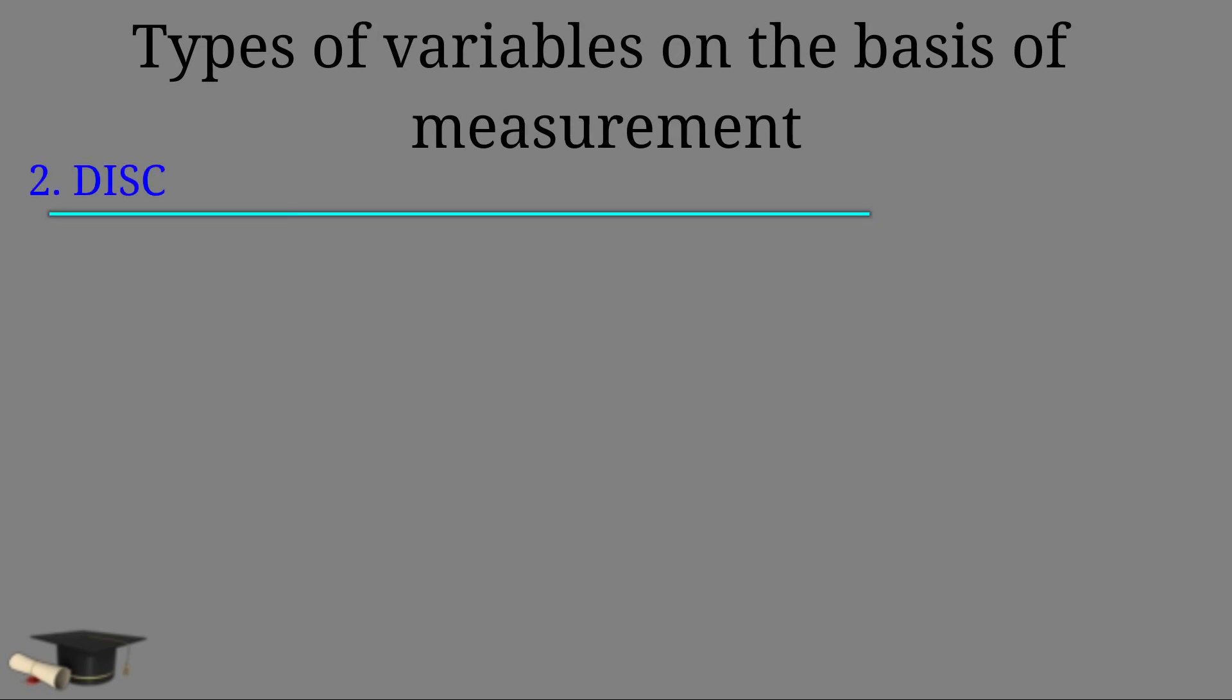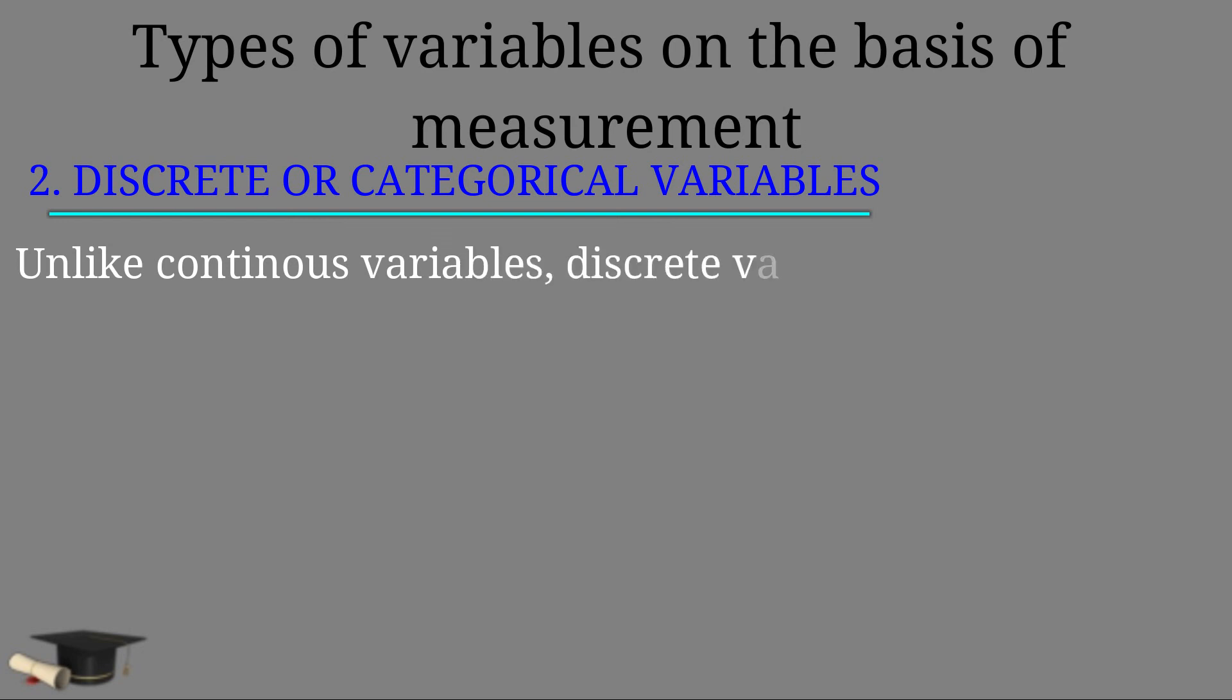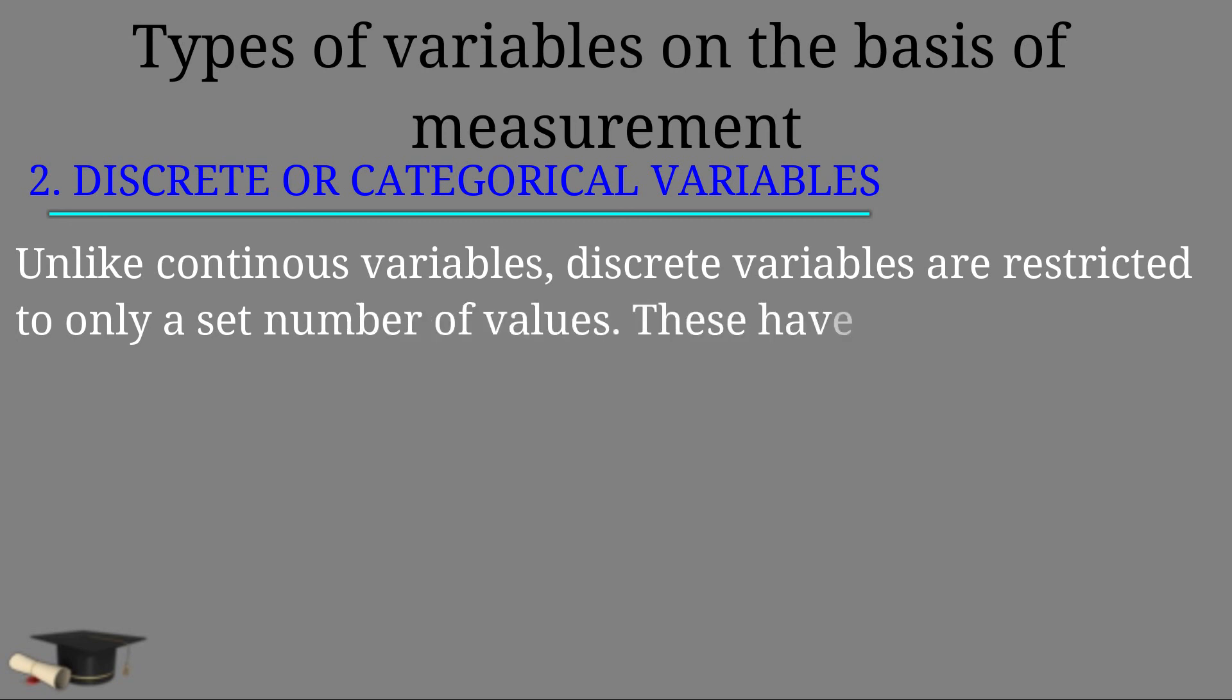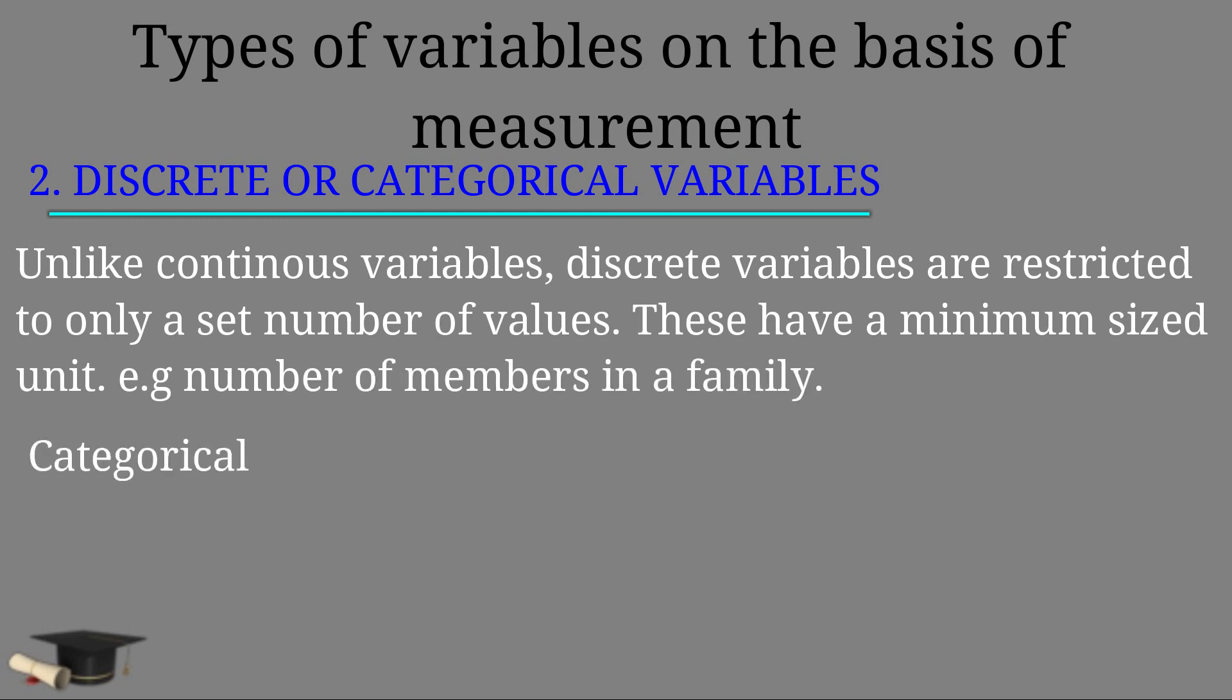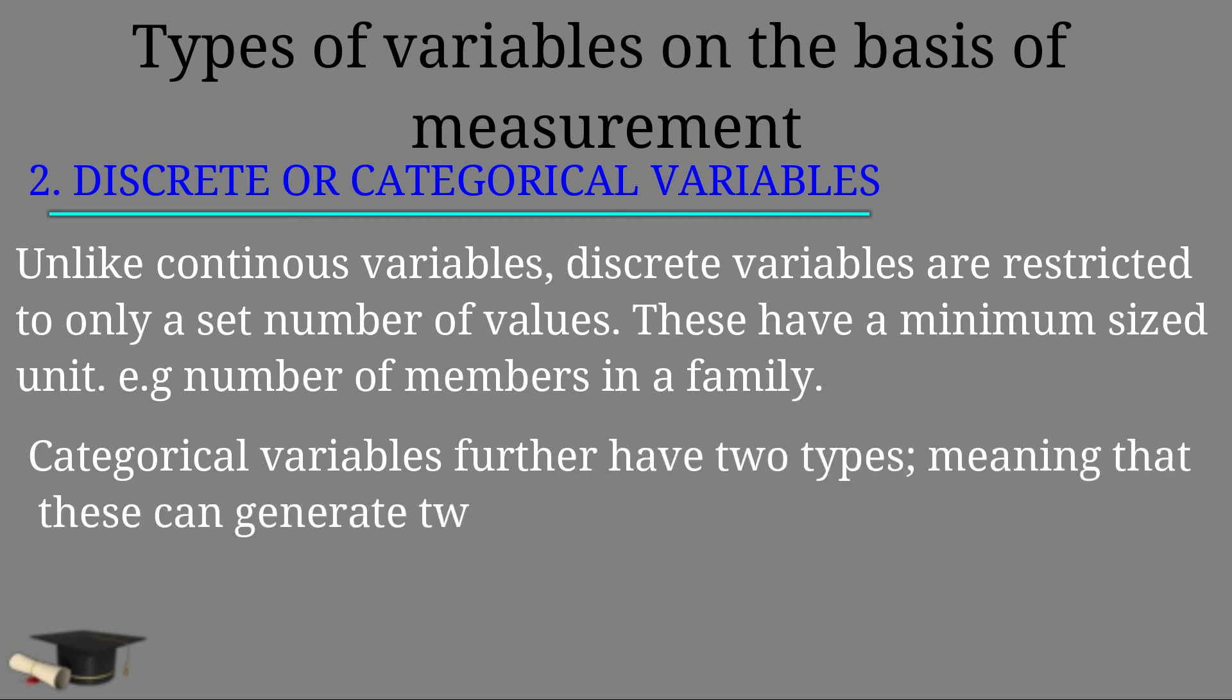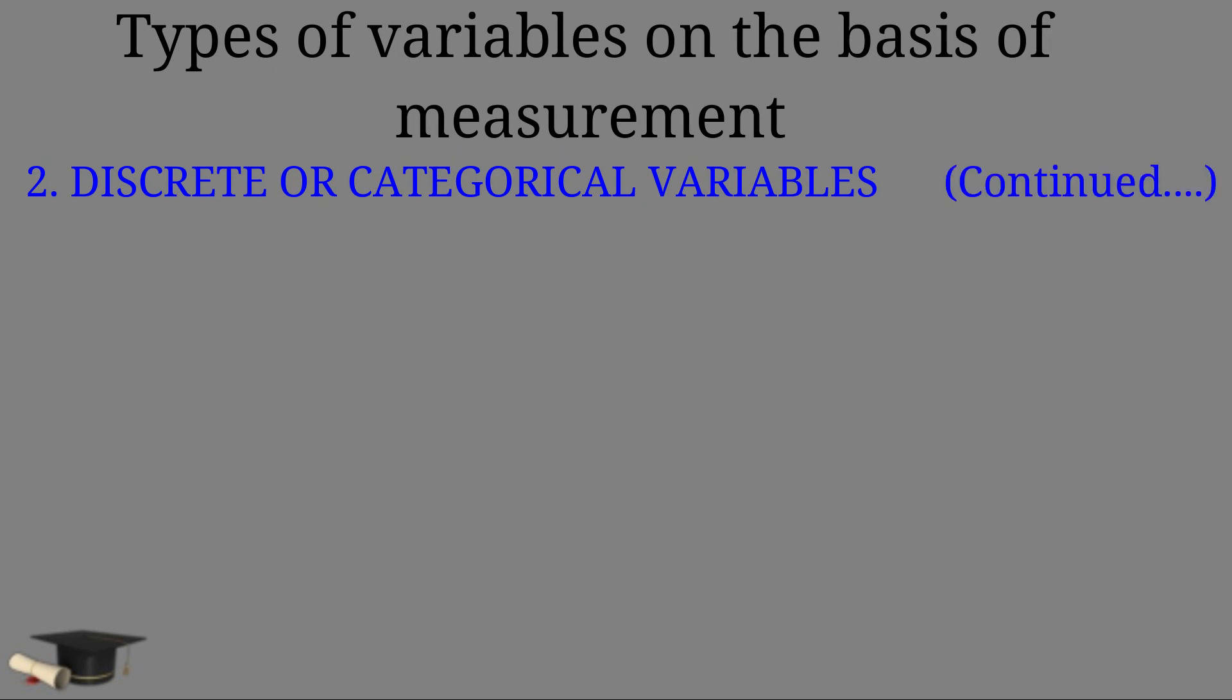Number two, discrete or categorical variables. Unlike continuous variables, discrete variables are restricted to only a set number of values. These have a minimum sized unit, for example, number of members in a family. Categorical variables further have two types, which means that these can generate two types of categories.